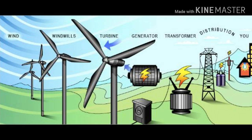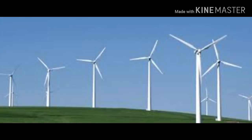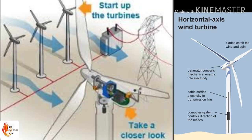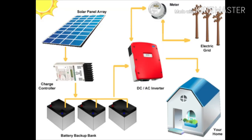Wind power plants rotate the blades of a turbine, which moves the generator to generate electricity. Modern windmills turn mechanical energy into electrical energy.